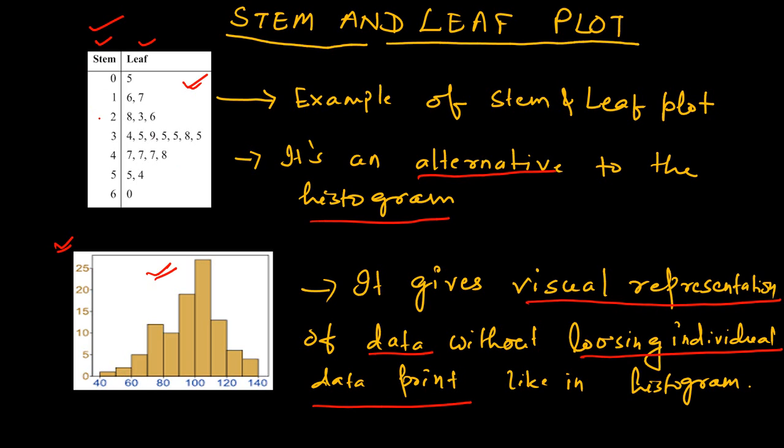In the stem and leaf plot, you do not lose the individual data points - the individual data points are represented on the plot. This particular number is 5, and this particular number is 16 and 17.